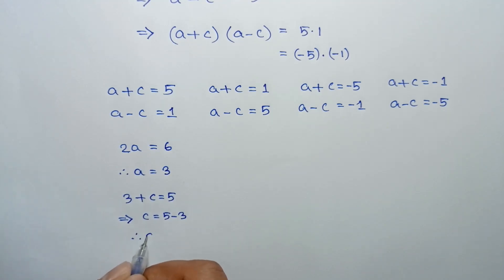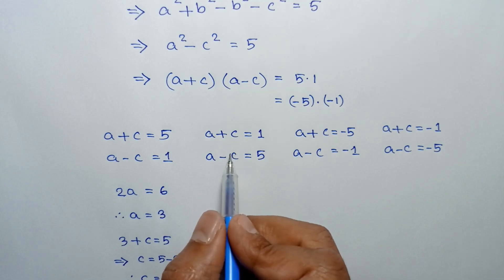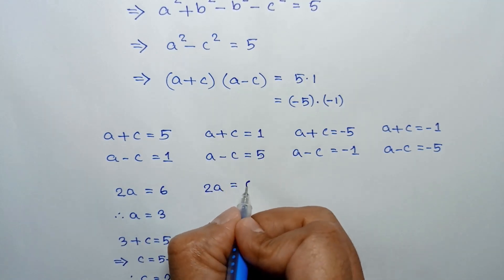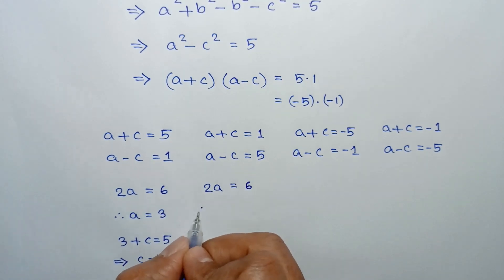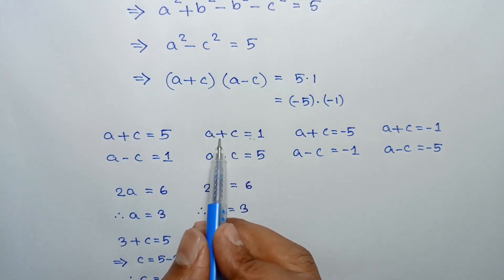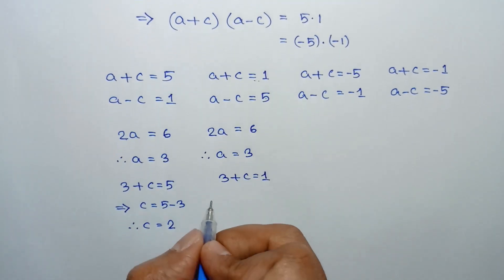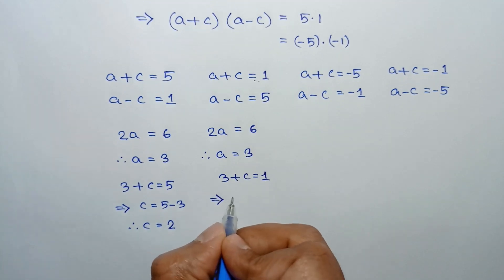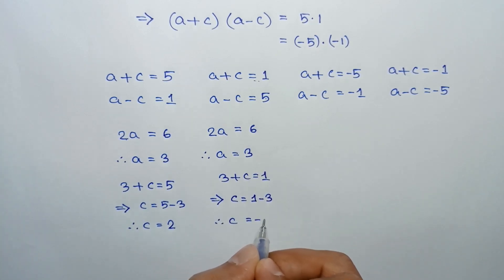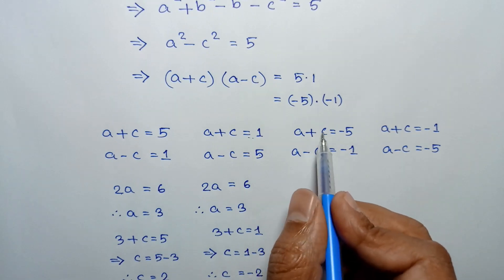For Case 2, adding a plus c equals 1 and a minus c equals 5: the c terms cancel, giving 2a equals 6, so a equals 3. Substituting a equals 3 into a plus c equals 1, we get 3 plus c equals 1, so c equals 1 minus 3, which gives c equals negative 2.